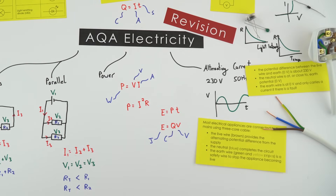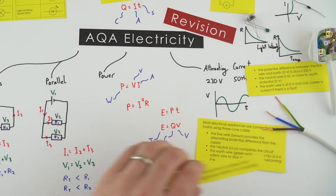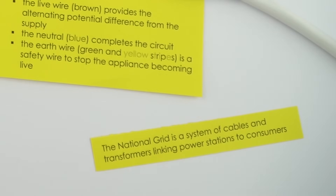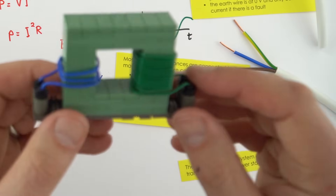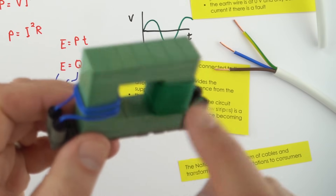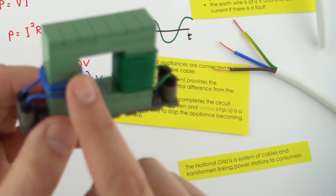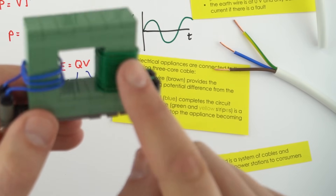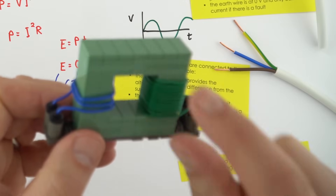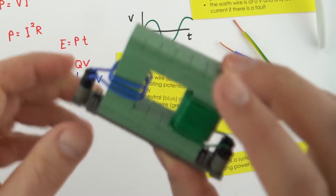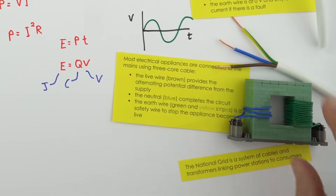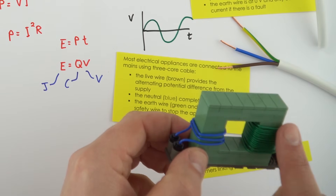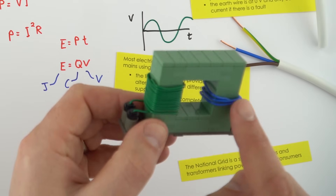AC is useful because it allows us to transfer electricity over large distances using the national grid — a system of cables and transformers linking power stations to consumers. A transformer has two coils of wire, the primary and secondary, wrapped around an iron core. An alternating supply in one coil induces an alternating supply in the other, allowing us to massively increase potential difference and decrease current, which reduces energy losses. Step-up transformers increase voltage; step-down transformers decrease voltage.